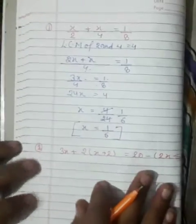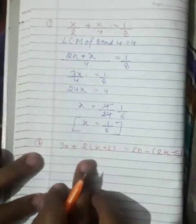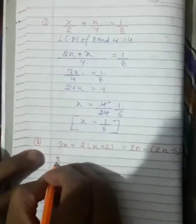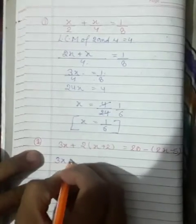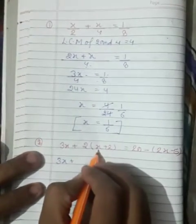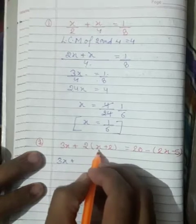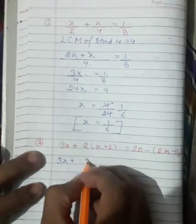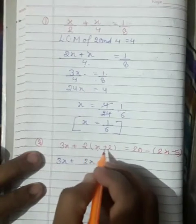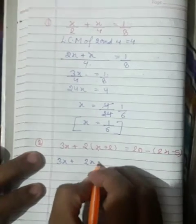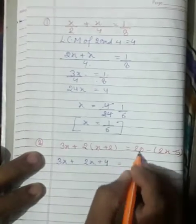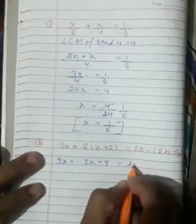Students, this is our next type of question. You will write here: 3x plus — 2 multiplied by this bracket. 2 multiplied by x, we get 2x, and 2 multiplied by 2, we get 4. That is equal to 20.